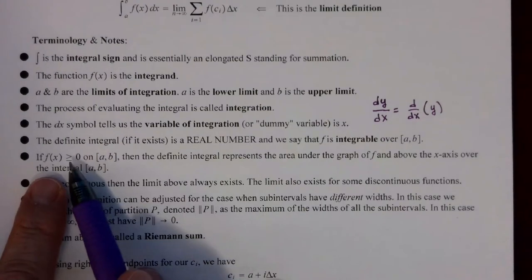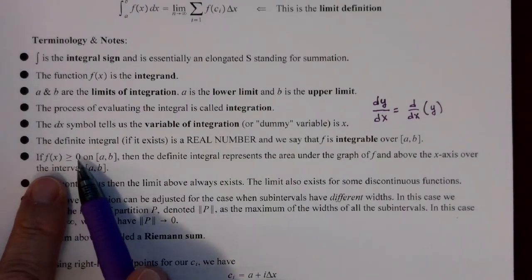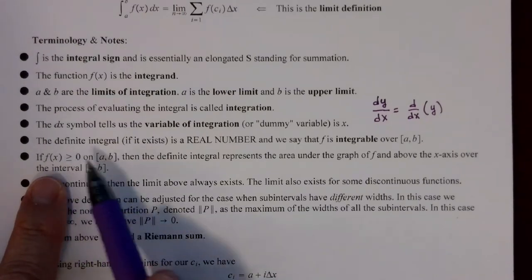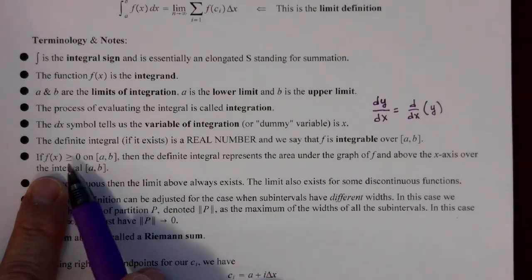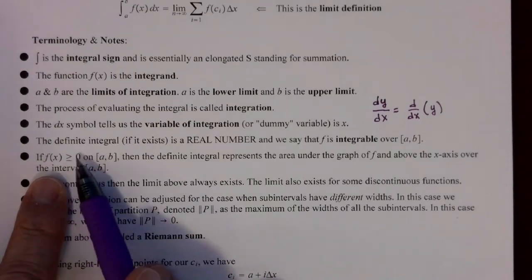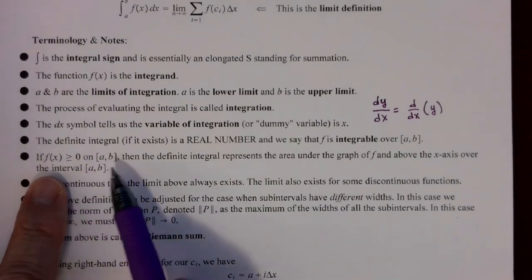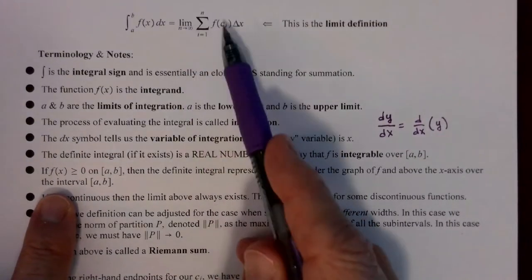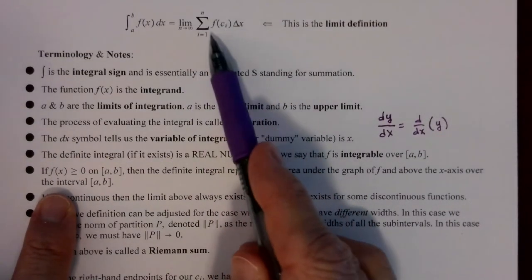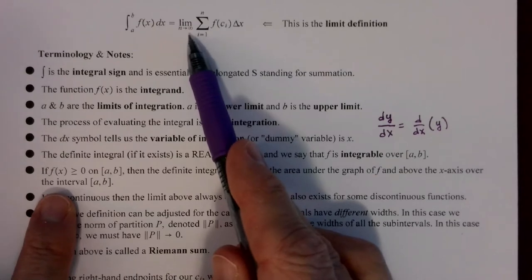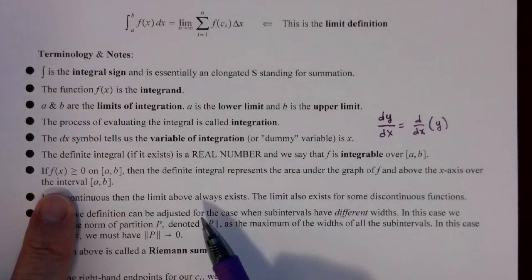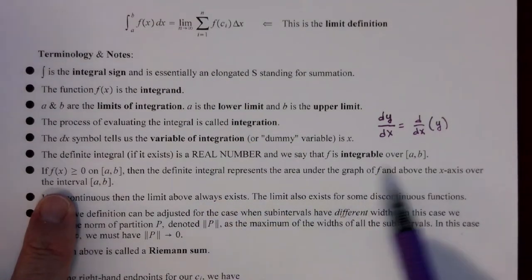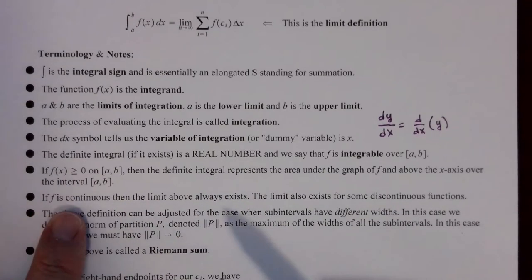Here's an important tie-in from what we did before: if the function's output is always greater than or equal to zero — meaning the graph is always above or on the x-axis over the interval from a to b — then the definite integral represents the area under the graph of f and above the x-axis over that interval.